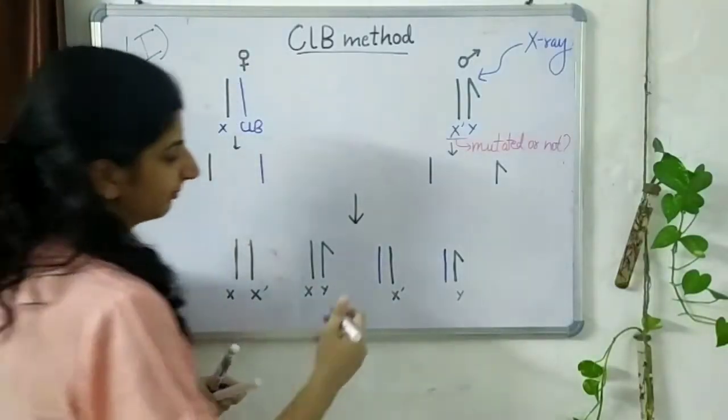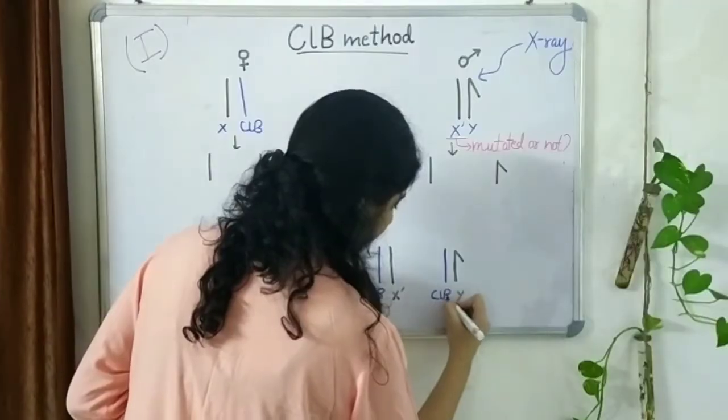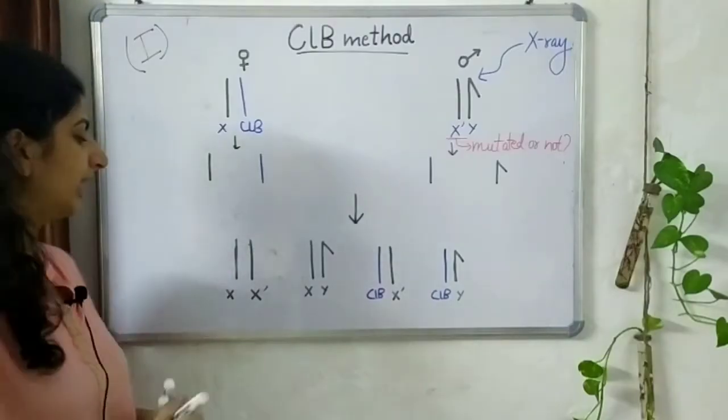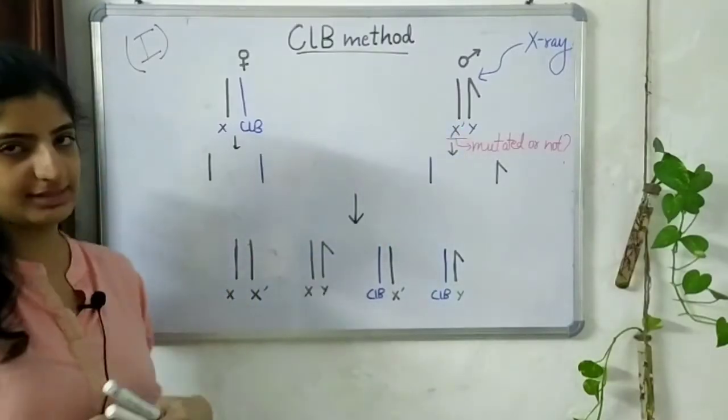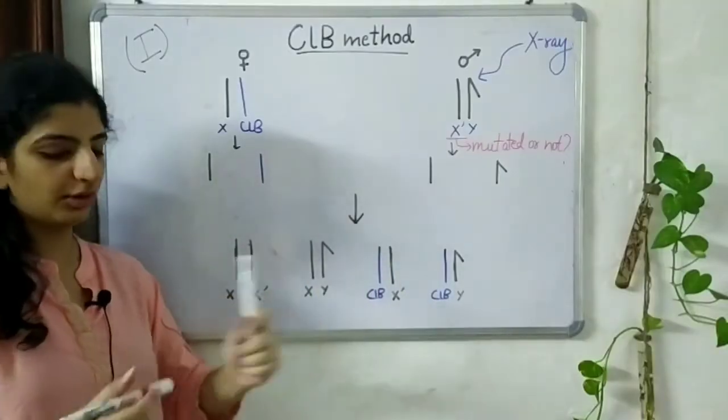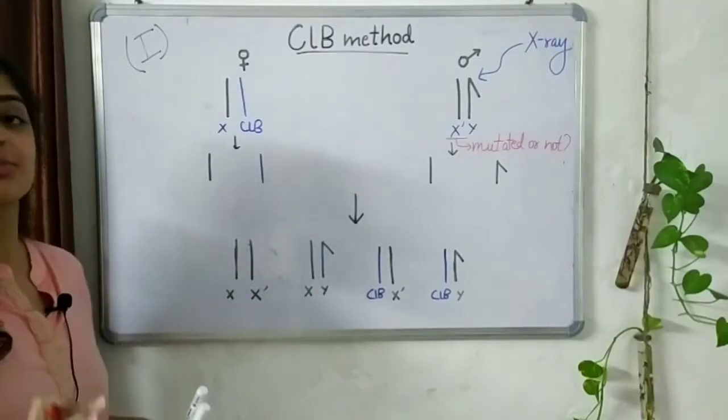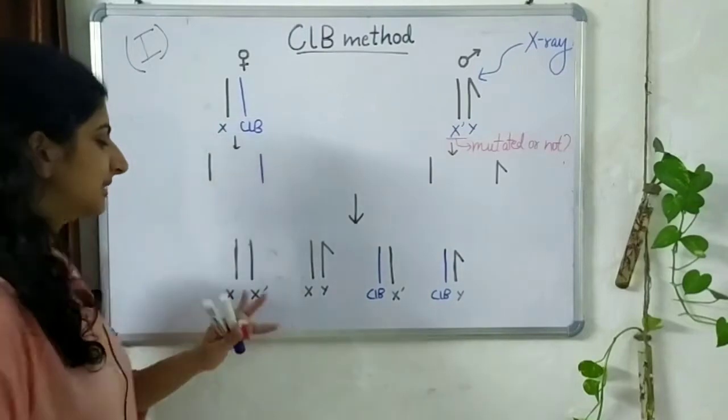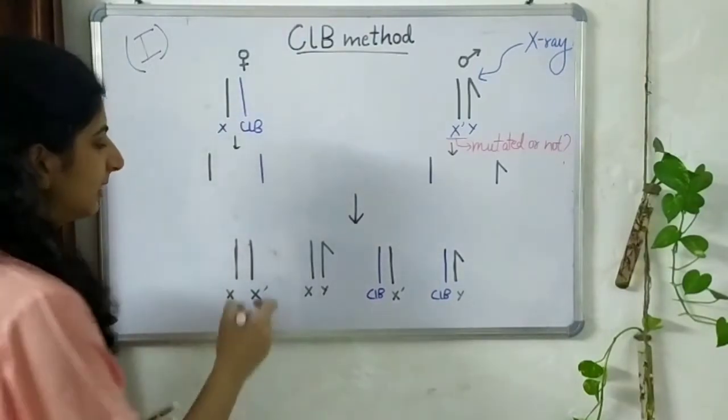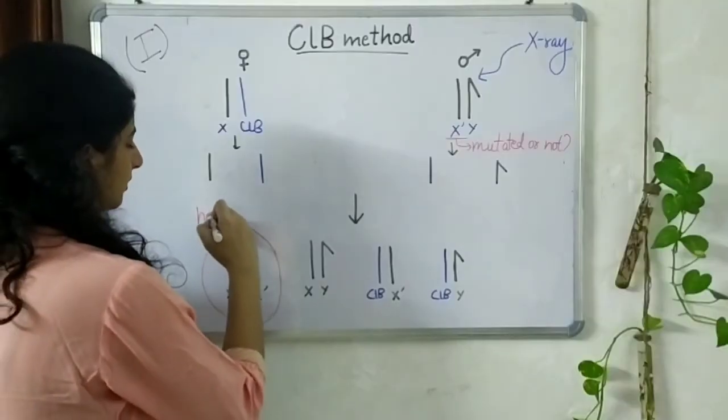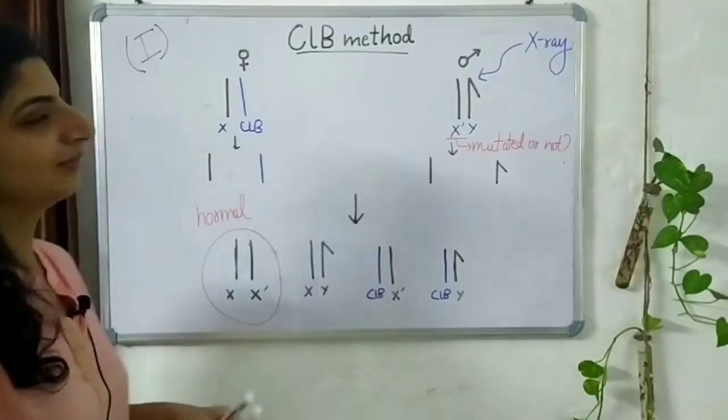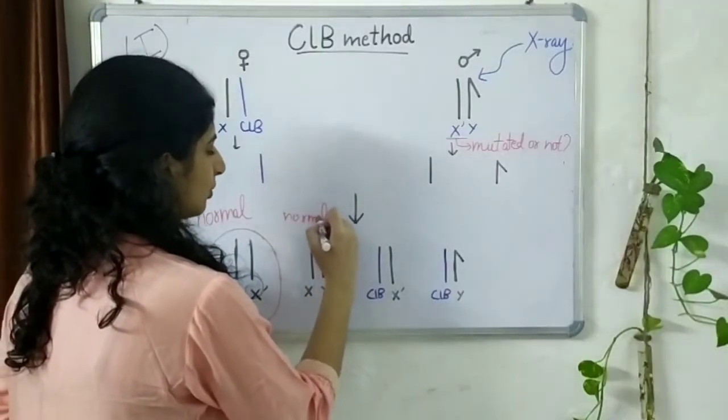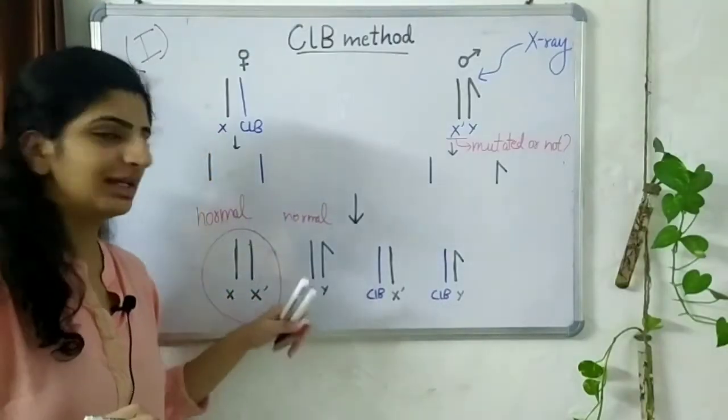Now, we have to finally screen for the progeny that we need. Now, let's look at the first organism. This fly has an X and a irradiated X dash that we don't know yet if it's mutated or not. However, even if this is mutated, our mutation was sex-linked and recessive. Since there is just one copy of that mutation present, this fly is going to be a normal female. As we go to the X and Y, this is obviously again normal because there is no irradiated or the CLB chromosome present here.